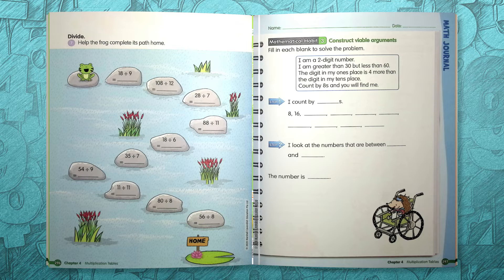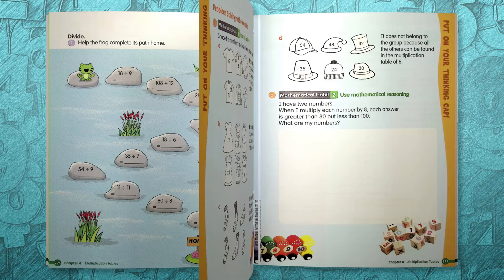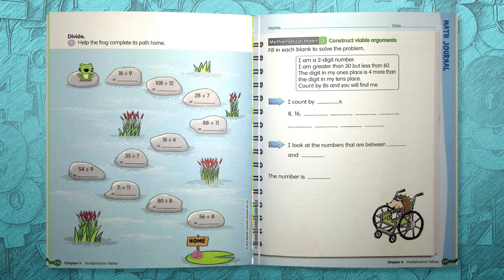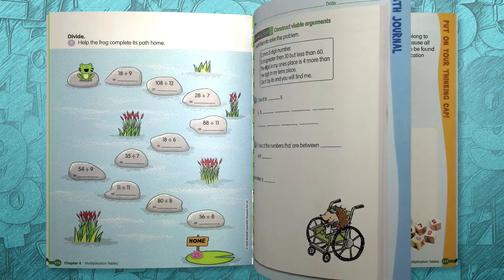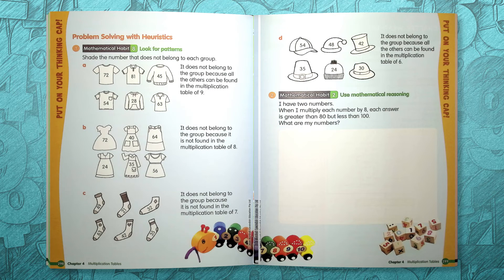Other activities in the student edition include math journal and put on your thinking cap. Math journal pages allow students to review and write about math concepts. Put on your thinking cap helps students with non-routine problems.